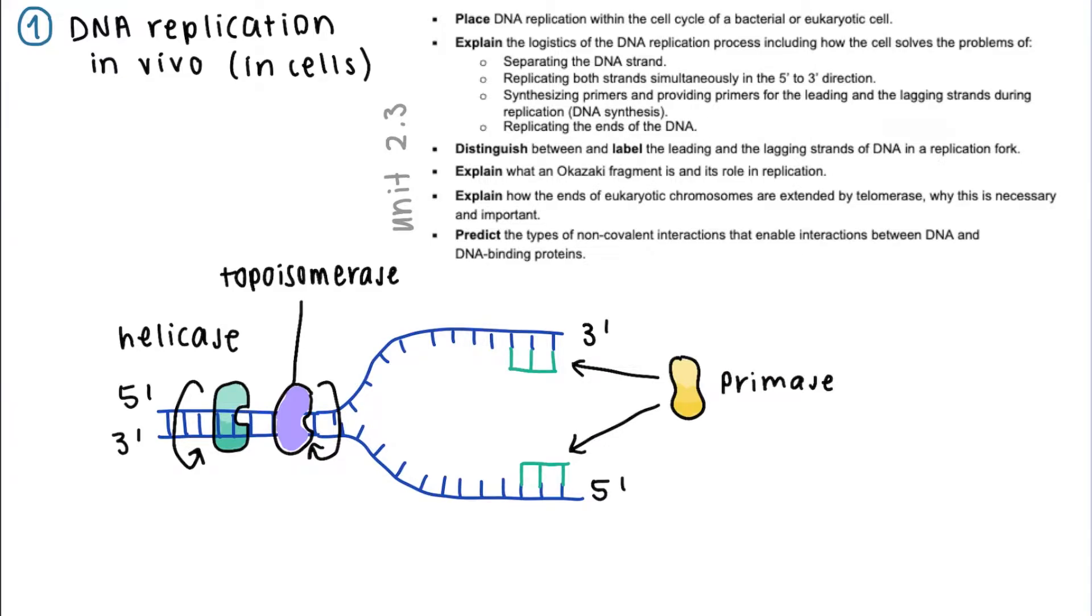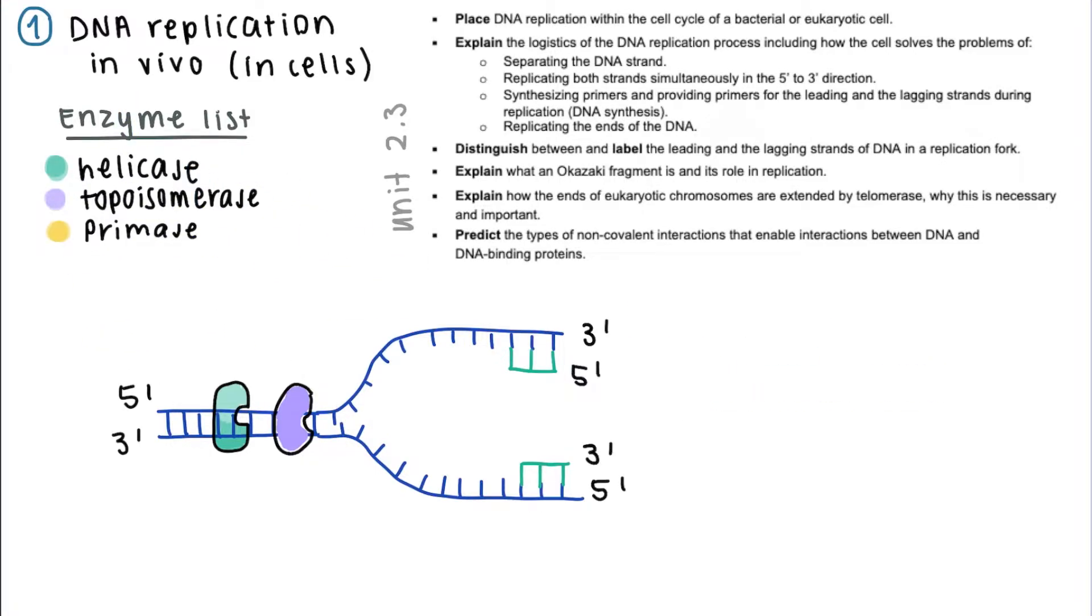They're added through complementary base pairing, and they indicate where nucleotides need to be added. It's important to note that new nucleotides, or base pairs, can only be added to the hydroxyl group of a 3' end, and this is what DNA polymerase does.